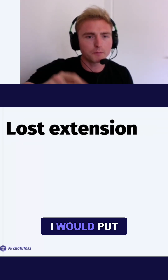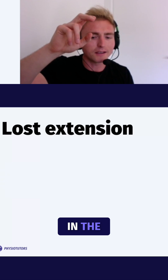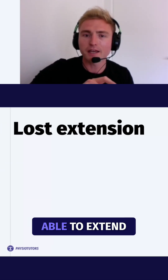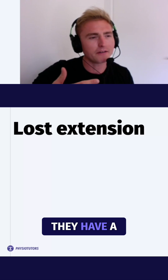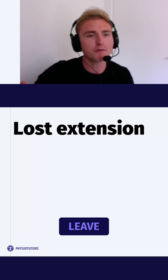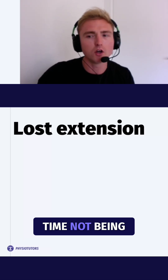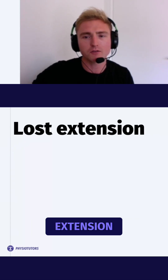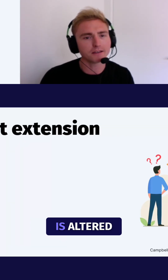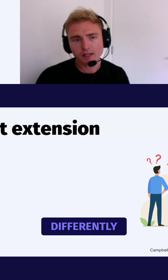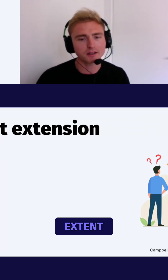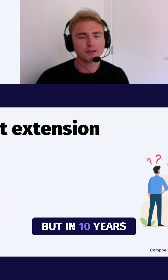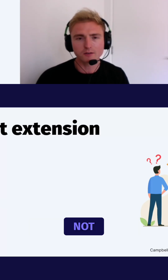Thinking on that systems model, I would put that lost extension in the functional biomechanics. If a person has been able to extend their knee normally, then has a slight injury and leaves the clinic not being able to fully extend their knee — without full knee extension during their gait pattern — their gait is altered. They're loading that knee differently and their quads are not going to be activating to the same extent. For two weeks that matters not at all, but in 10 or 20 years, this certainly is not going to be ideal if we're wanting to put our foot on the brake of decelerating OA.